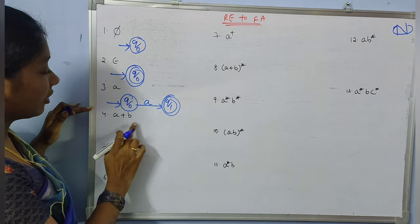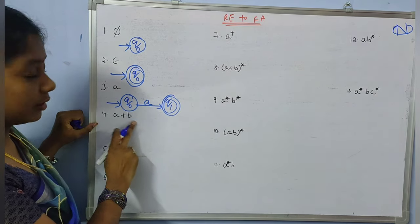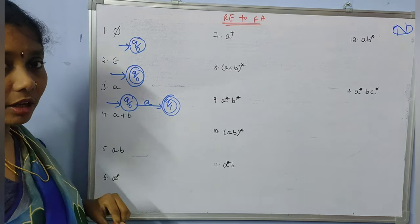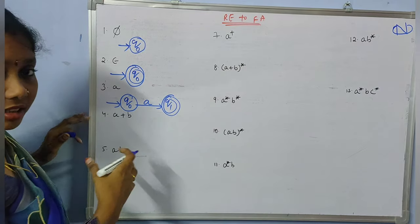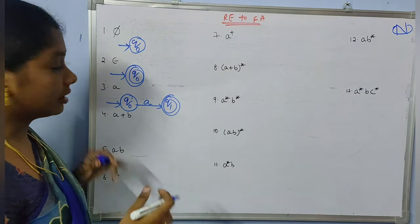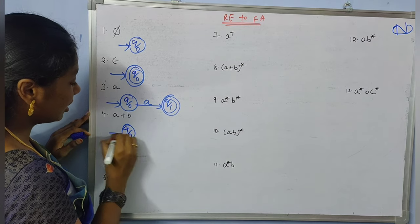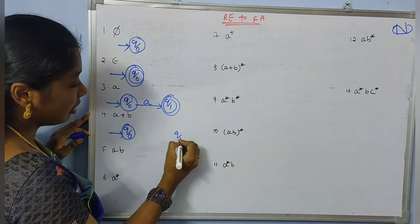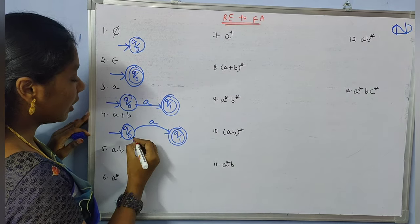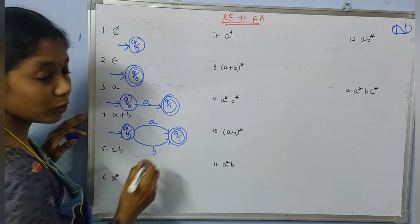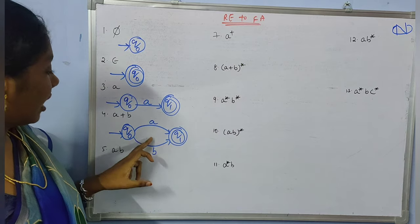We can reach the final state with either 'a' or 'b'. The fourth regular expression says we can have the string either 'a' or 'b'. For this kind of 'either/or' case, you can have parallel paths to reach the final state. Here is the initial state and here is the final state, and you can go either by this way or by this way.